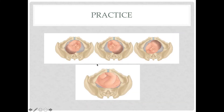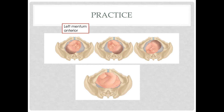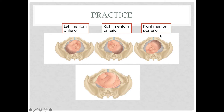This is a fetus in a face presentation because you can see the face in the drawing. Since this is a face presentation, the marker is the chin or mentum. In the first case, we have left mentum anterior. In the next picture, with the chin pointing towards the right anterior direction, it is right mentum anterior.